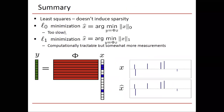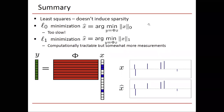In summary: we started with least squares, which doesn't induce sparsity and gave a non-sparse solution. We went to the other extreme, L0, which totally forces sparsity — x-hat minimizes the number of non-zero elements — but is not robust to noise and is combinatorially slow. Our compromise was L1 minimization: among the solutions to y equals φx, we seek the x with smallest L1 norm. L1 minimization is computationally tractable, requires somewhat more measurements than L0, is robust to noise, and gives the correct x-hat.